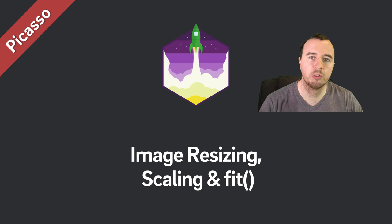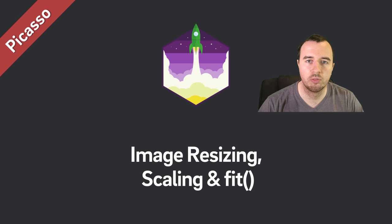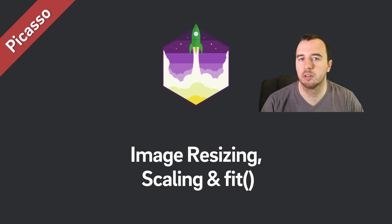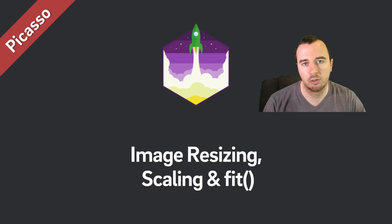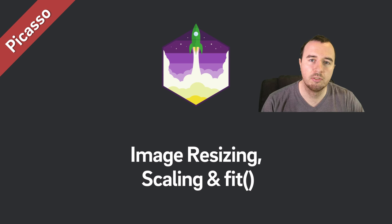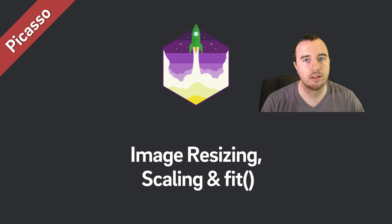Hey, what is up everyone! Norman from Future Student University, and welcome to another video in our Picasso series. In this video we will continue from the first video. Last time we looked at how to load images through Picasso in just one line of code. This time we will look at how to resize images, scale them correctly so they don't get distorted, and lastly add a neat little helper called fit. If you want to code along, you can find the code on our website — it's the first link in the description below.